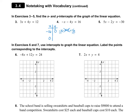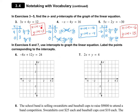Now we're going to plug in 0 for X. So negative 0 minus 4Y is equal to 16. The 0 cancels out. We're going to divide out negative 4, and we get 16 divided by negative 4, which is negative 4. So my X-intercept is negative 16, and my Y-intercept is negative 4. I would like for you to try numbers 3 and 5 on your own. Pause the video and then turn it back on when you're done. For number 3, I got the X-intercept is 4 and the Y-intercept is 3. For number 5, I got the X-intercept is negative 6 and the Y-intercept is 15.